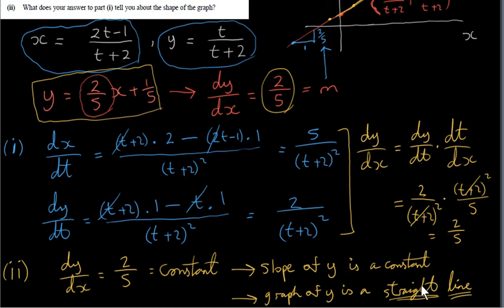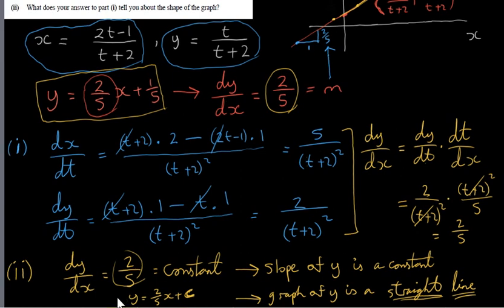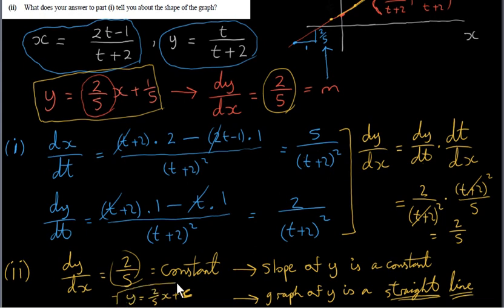We don't know every detail of the straight line from dy/dx alone, but we know its slope is 2/5, so the equation must have the form y = (2/5)x + c for some constant c. From the earlier Cartesian conversion we know c = 1/5, giving y = (2/5)x + 1/5. Just knowing dy/dx = 2/5 is enough to confirm it's a straight line with slope 2/5.